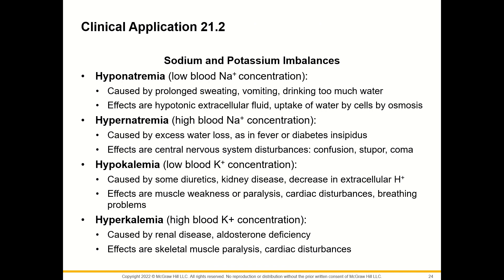Sodium and potassium imbalances relate to water imbalances. Hyponatremia (low blood sodium) is caused by prolonged sweating, vomiting, and drinking too much water, resulting in hypotonic extracellular fluid and uptake of water by cells. Hypernatremia (high blood sodium) is caused by excess water loss as in fever or diabetes insipidus, causing CNS disturbances, confusion, stupor, and coma. Hypokalemia (low blood potassium) is caused by some diuretics, kidney disease, and decreased extracellular hydrogen ions, causing muscle weakness or paralysis, cardiac disturbances, and breathing problems. Hyperkalemia (high blood potassium) is caused by renal disease and aldosterone deficiency, causing skeletal muscle paralysis and cardiac disturbances.